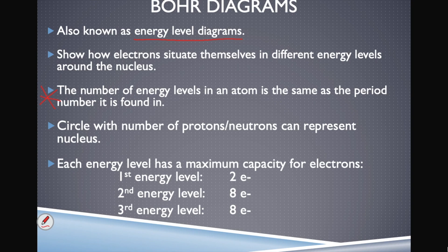We can draw a circle to represent the nucleus of the atom with protons and neutrons inside. What we really care about in Bohr diagrams is where the electrons are found. Every energy level has a maximum capacity, and different energy levels have different maximum capacities.